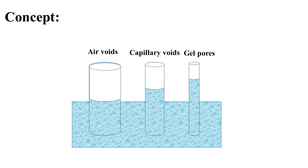To understand the freeze and thaw process, it is important to understand how many pores and voids are present in concrete. There are three types: air voids, capillary voids, and gel pores.